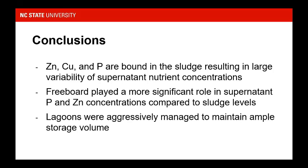Our main conclusions: zinc, copper, and phosphorus are bound into solids and sludge, confirming that lower lagoon levels raise the chance of drawing high concentrations of these nutrients into the effluent. Freeboard played a more significant role in supernatant phosphorus and zinc concentrations compared to sludge level alone. The data also showed that farmers and growers are really taking advantage of the drawdown rule, aggressively managing their lagoons to avoid the risk of breaching when they have the ability to draw down.